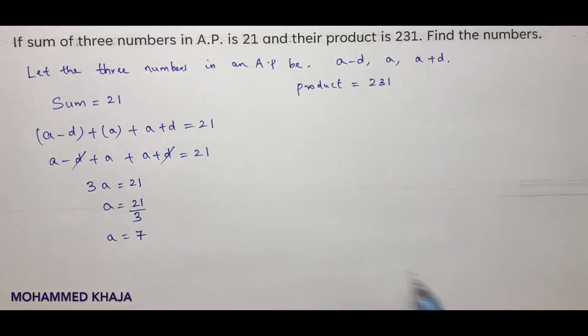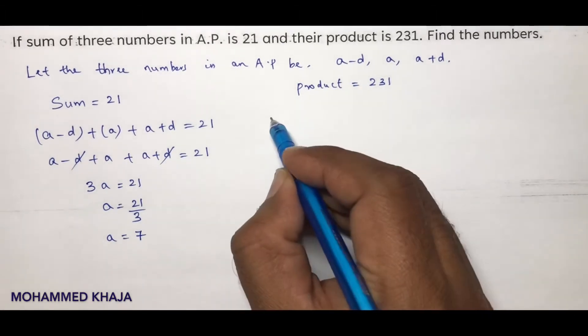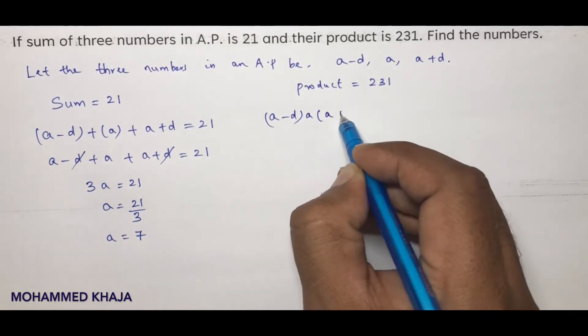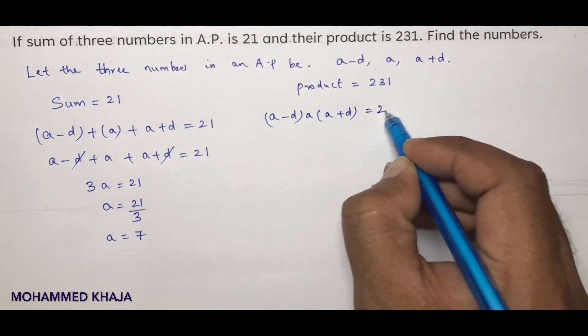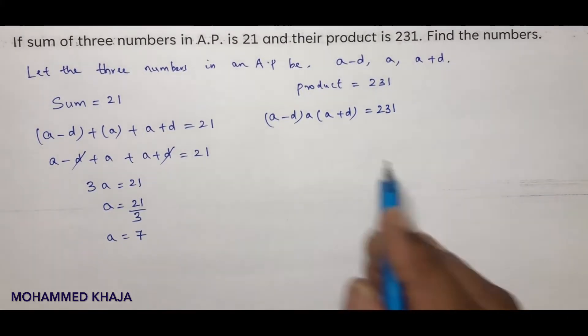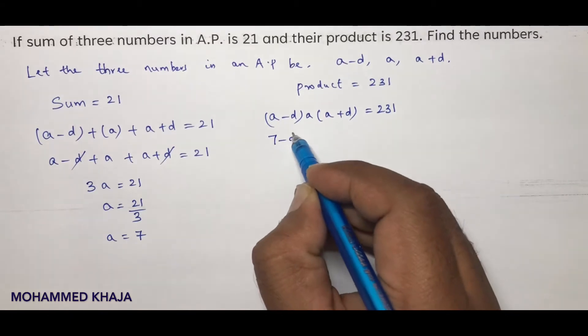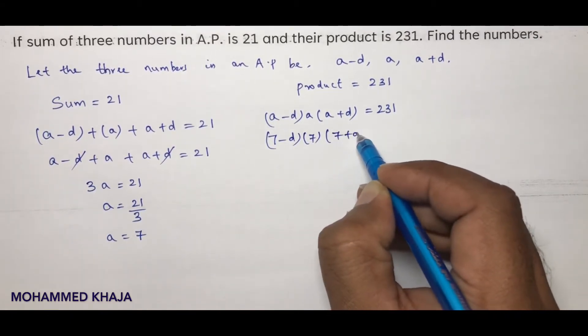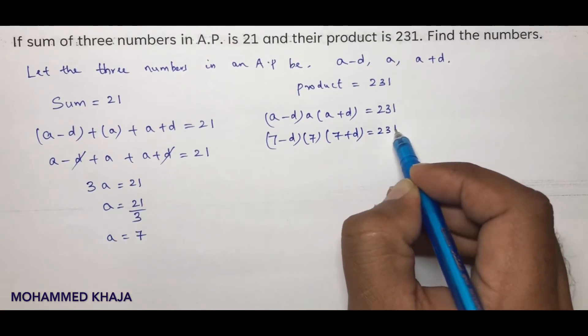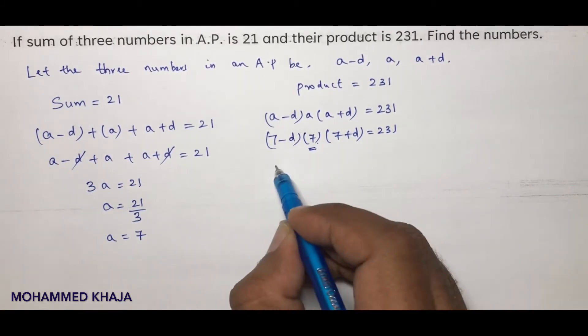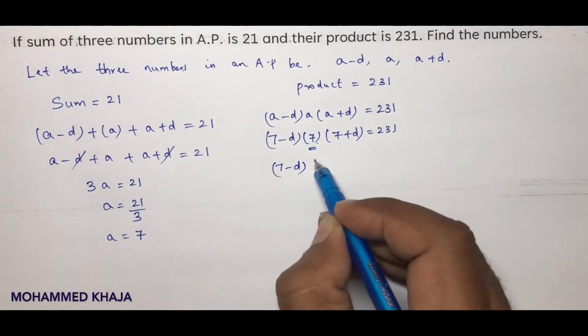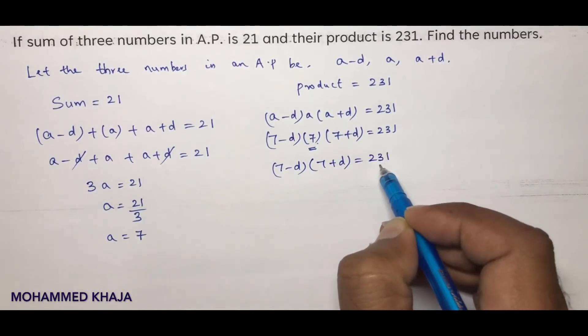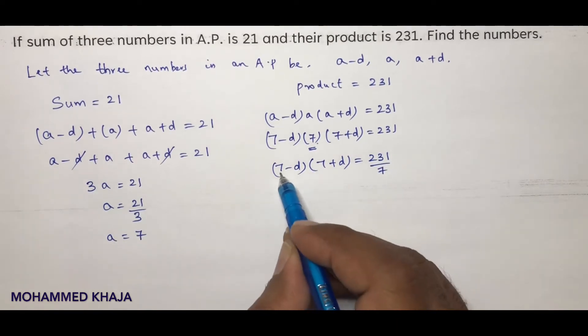Now product: a minus d into a into a plus d is 231. Here a is 7. So 7 minus d into 7 into 7 plus d equals 231. Transpose this 7 here, so you'll be left with 7 minus d into 7 plus d is 231 by 7.